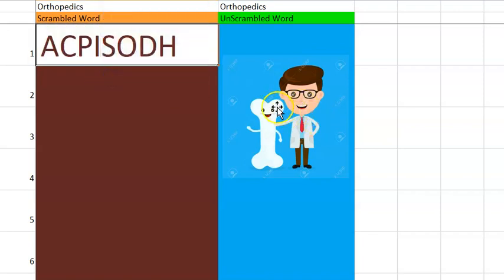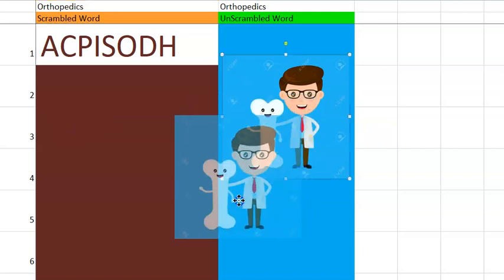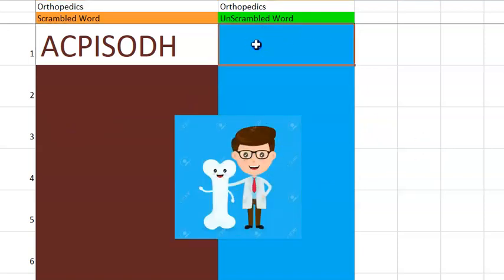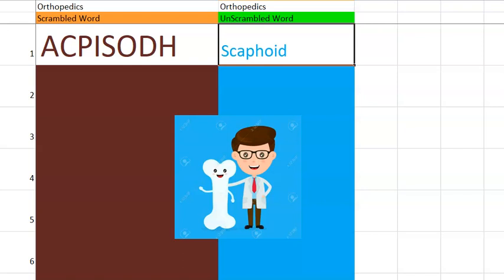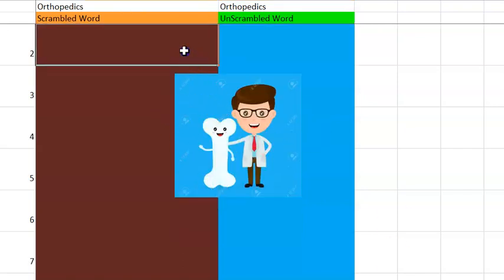What do you think this one is? Take a clue. It's the name of a bone, a small one, a carpal bone starting with S. Scaphoid. Very good. Shall we go to the second one?